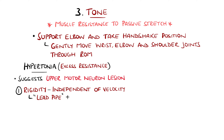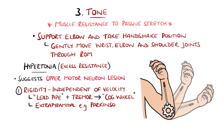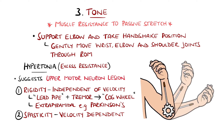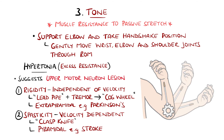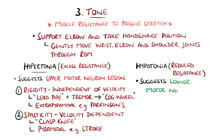Rigidity is the result of extrapyramidal causes such as Parkinson's disease, and when a tremor is superimposed, it is described as cogwheel rigidity. Spasticity is velocity dependent, meaning the faster the limb moves, the more resistance is felt — sometimes described as clasp knife rigidity — and is due to pyramidal causes like a stroke. A lack of resistance, called hypotonia, is typically associated with lower motor neuron lesions.